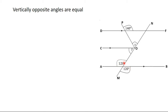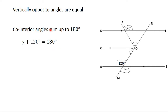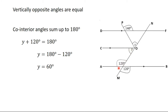Now if this is 120 degrees, from the angle properties of parallel lines, I know that Y and 120 degrees are co-interior angles. Co-interior angles sum up to 180 degrees, so Y plus 120 degrees gives me 180 degrees, and Y gives me 60 degrees. I wanted to find Y using co-interior angles, and since 120 degrees is vertically opposite to that angle, Y plus 120 degrees equals 180 degrees.